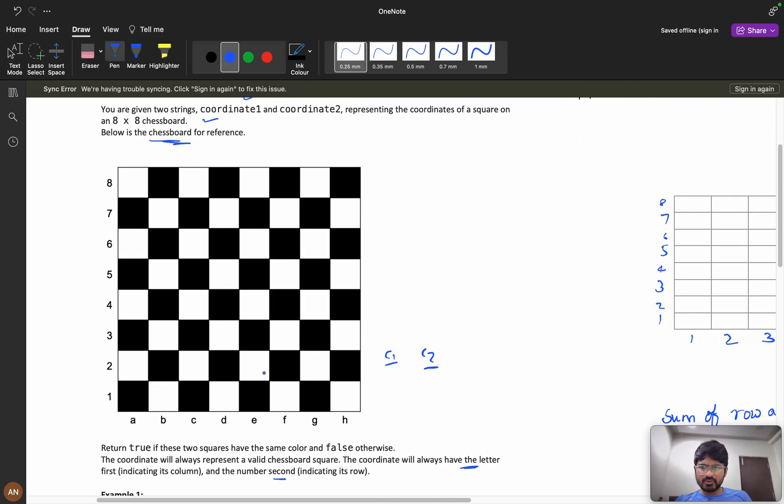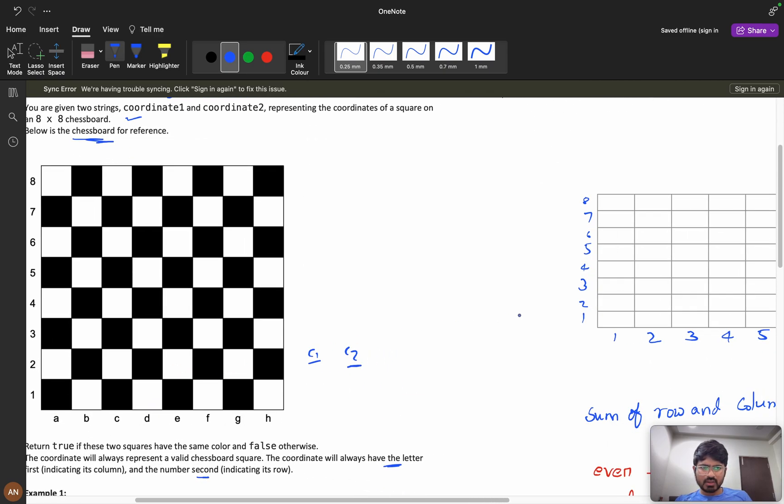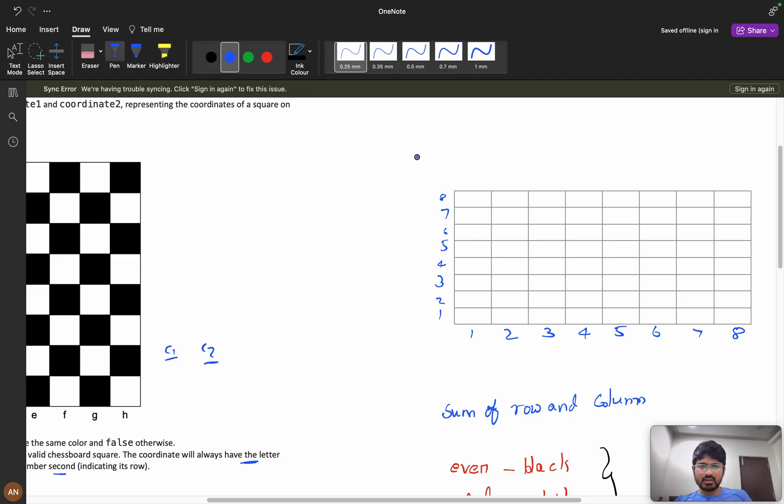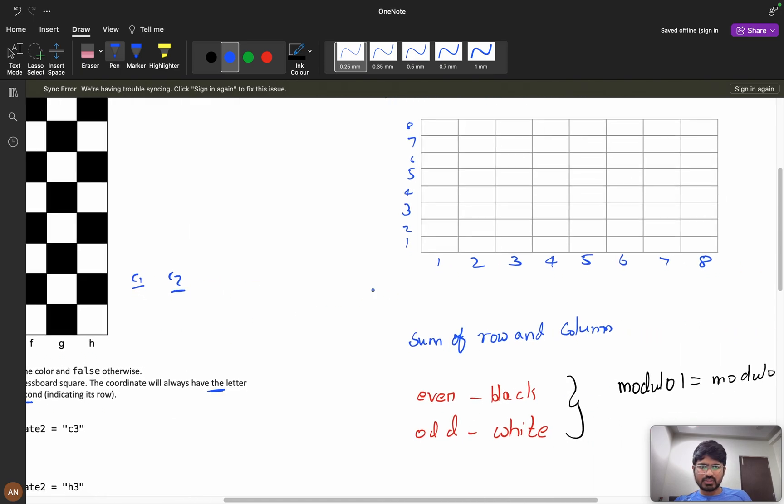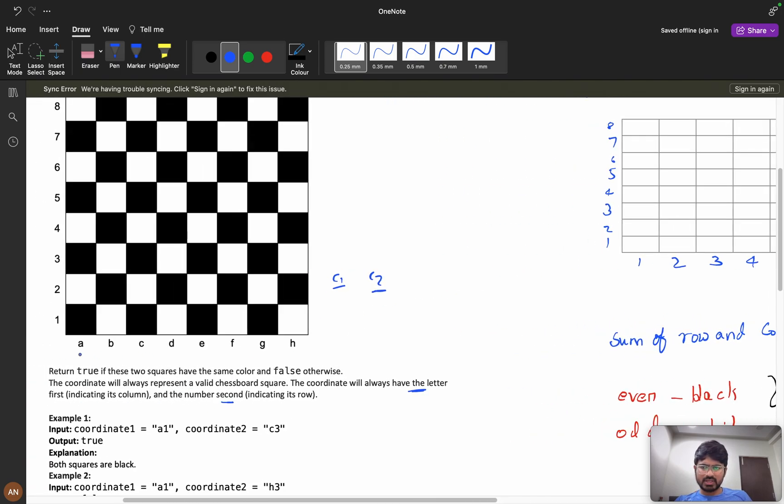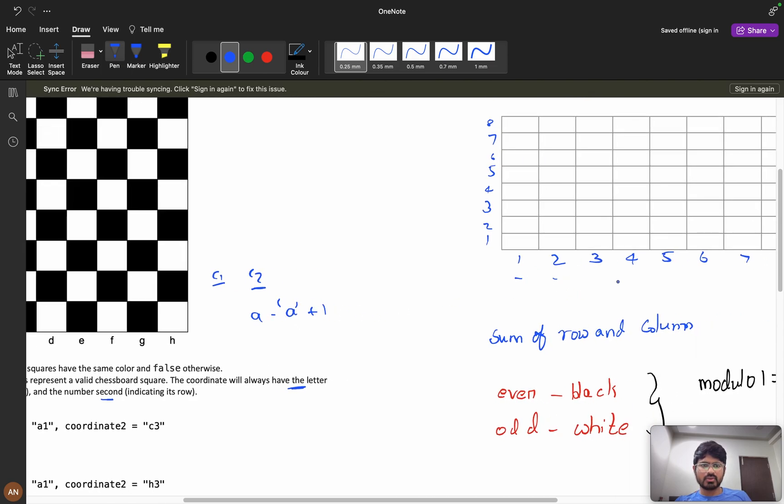If you see here, consider an 8x8 grid and replace a with 1, b with 2. These are all my values I have replaced. If you are doing a minus a plus 1, then you are going to get 1, 2, 3, 4 these values. Or b minus a plus 1, you will get 2. For c, you will get 3.